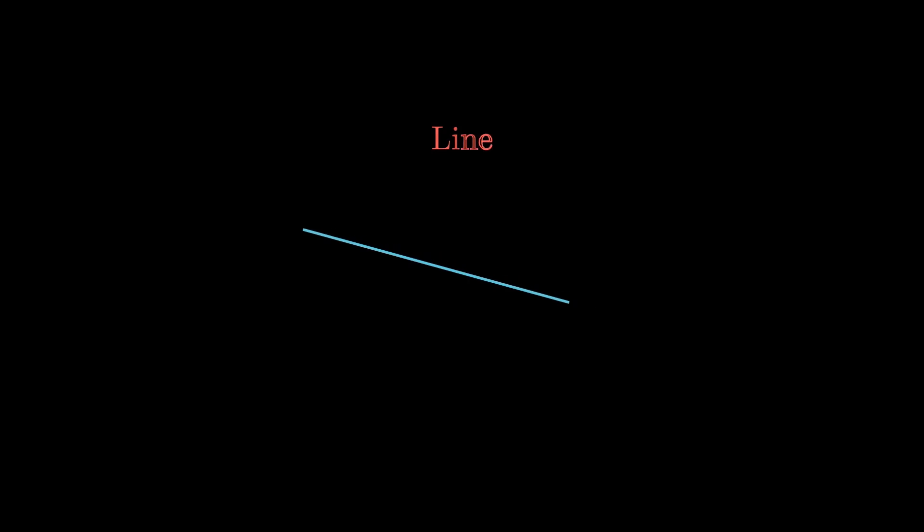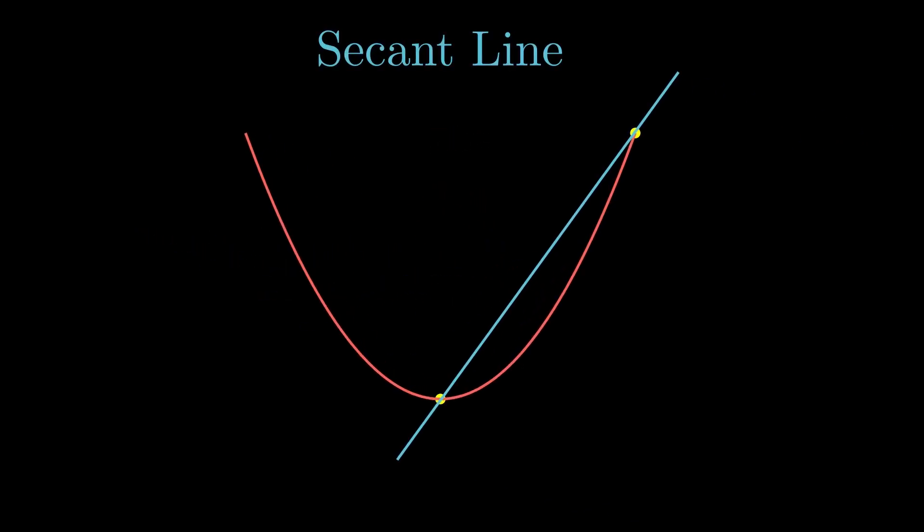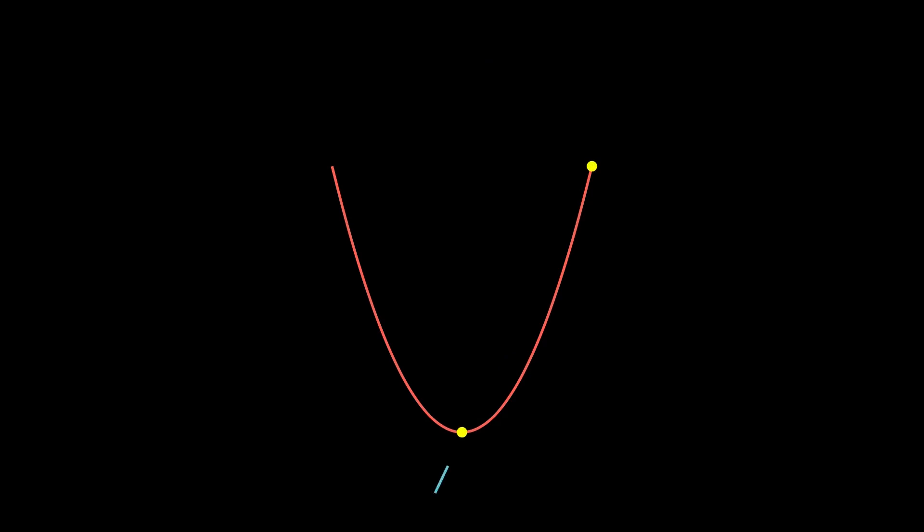Starting with the question: what is a secant line? It is a line passing through two points of a curve, and what is more important is its slope, as it tells a lot about the nature of the curve and has a crucial role in the study of derivatives.